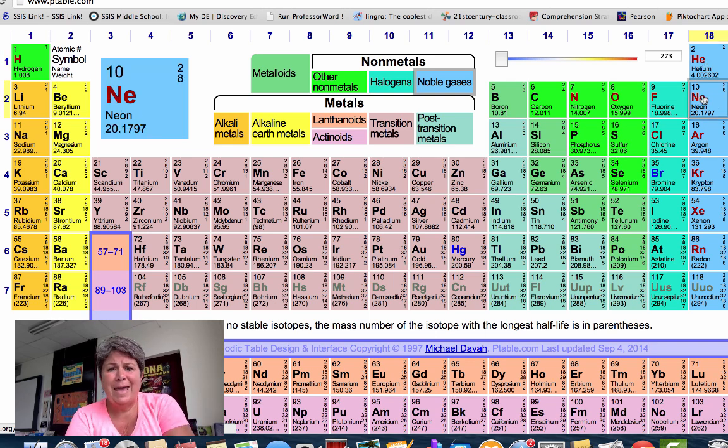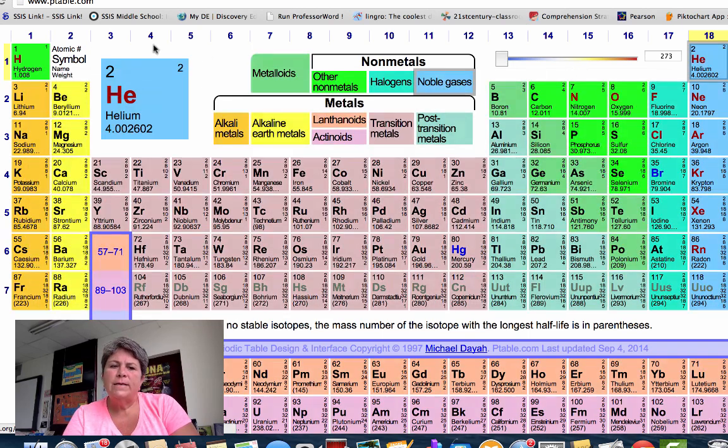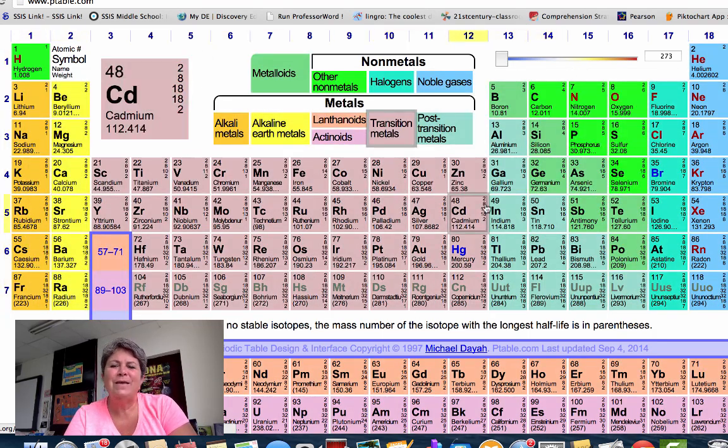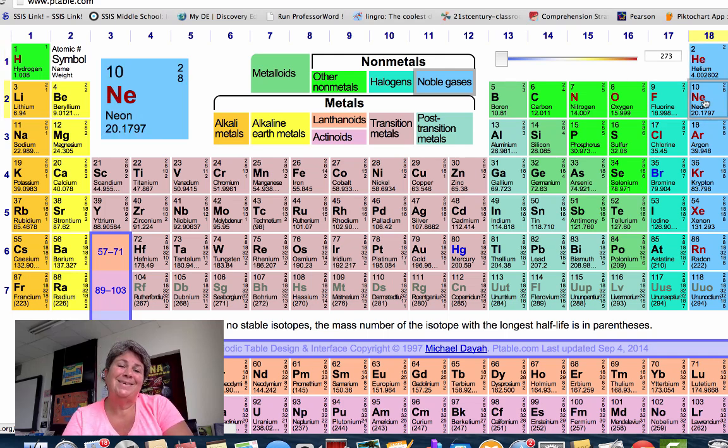Maybe think of them as like the cool kids. They're really calm, laid back, stable. They don't have to be with anybody. They don't have to react. They're happy and content just the way they are. They have either two, as in helium, or all the rest of them have eight valence electrons. Helium only has two because it only has two electrons to begin with. So all of the noble gases are considered very, very stable.